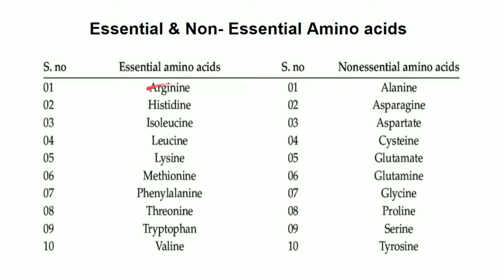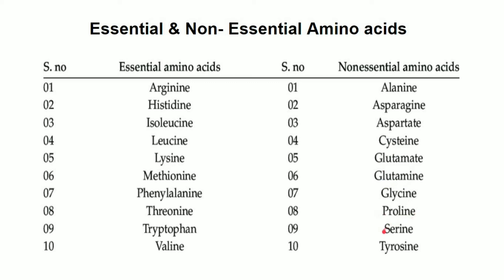We will see how essential amino acids are listed: arginine, histidine, isoleucine, lysine, methionine, phenylalanine, threonine, tryptophan, valine. This is the essential amino acid list — that is why we must obtain them through diet. Non-essential amino acids are those the body can synthesize.